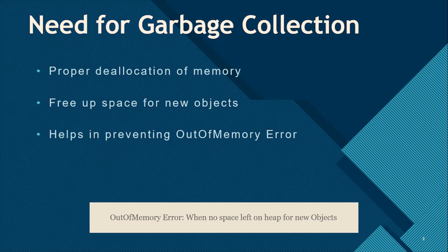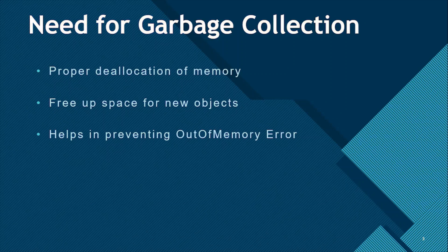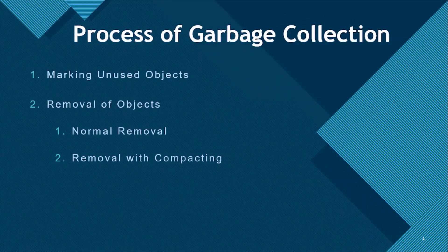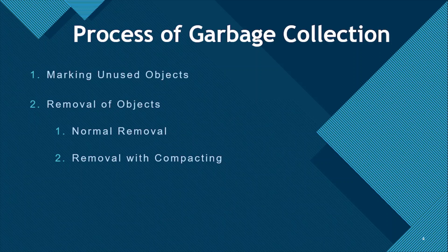Garbage collection does the cleanup job to remove unused objects and free space for new objects. The process of garbage collection is mainly two steps: first, marking the unused objects, and second, removing them. In the marking step, the garbage collector identifies which objects in memory are in use and which are not. All referenced objects will be kept, and all unreferenced objects will be marked for removal.